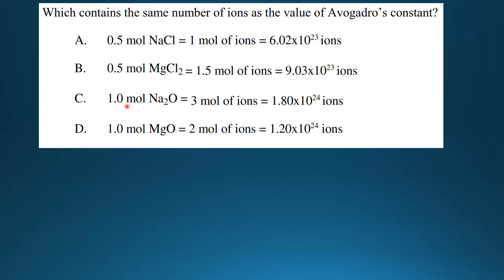Option C: 1 mole of sodium oxide, Na2O, is composed of 2 Na+ ions and 1 O2- ion, so we multiply 1 by 3 to give 3 moles of ions, and multiplying by Avogadro's constant gives 1.80 times 10 to the 24 ions. Option D: 1 mole of magnesium oxide, composed of Mg2+ and O2- ions, so we multiply 1 by 2 to give 2 moles of ions, and multiplying Avogadro's constant by 2 gives 1.20 times 10 to the 24 ions. So the correct answer is A.